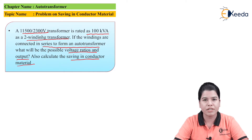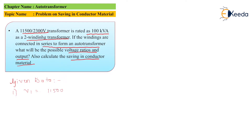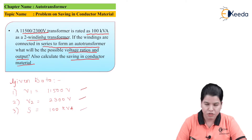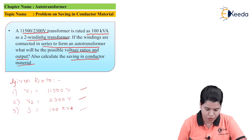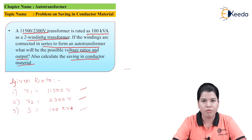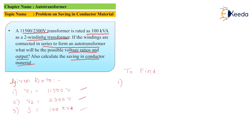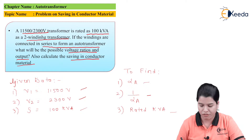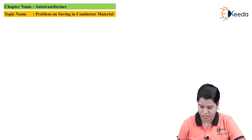The first step to solve this problem is to write down the given data. The given data is: V1 is equal to 11,500 volt, V2 is equal to 2,300 volt, and the kVA rating of the transformer is 100 kVA. In this problem we have to find alpha A, then 1 divided by alpha A, that is the saving in conductor material, and the third is the rated kVA.